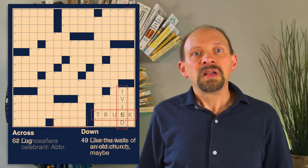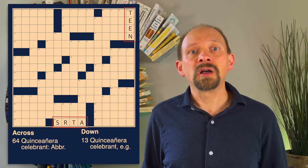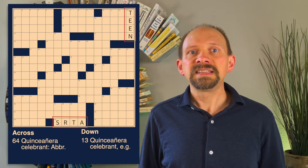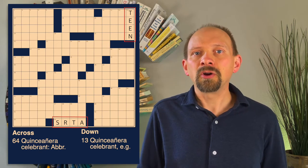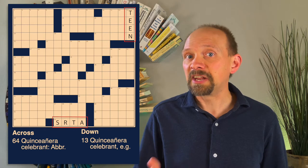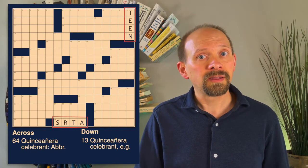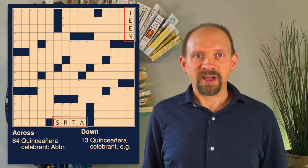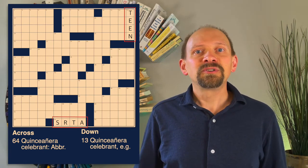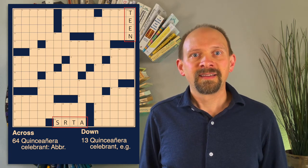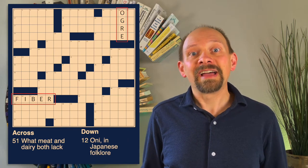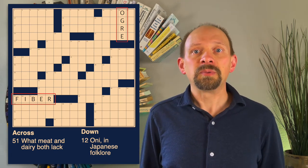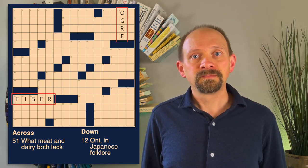In this puzzle, the clues for 13 down and 64 across are intentionally similar. And so their fills, teen and s-r-t-a, the Spanish abbreviation for señorita, a young unmarried woman, are related. But for the majority of non-intersecting fills, Ginsburg's independence assumption is reasonable. The probability that 12 down is ogre likely has nothing to do with the fill fiber in the opposite corner of the board. Pun noted.